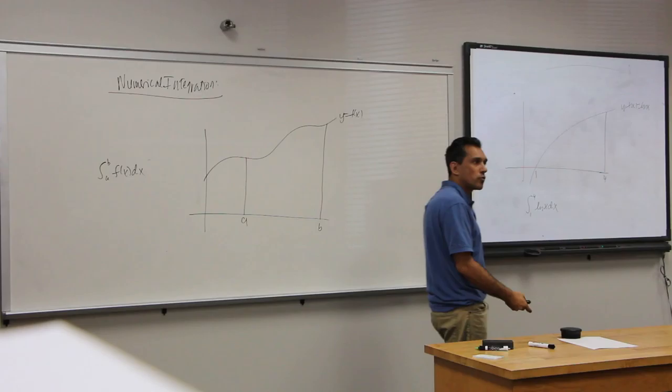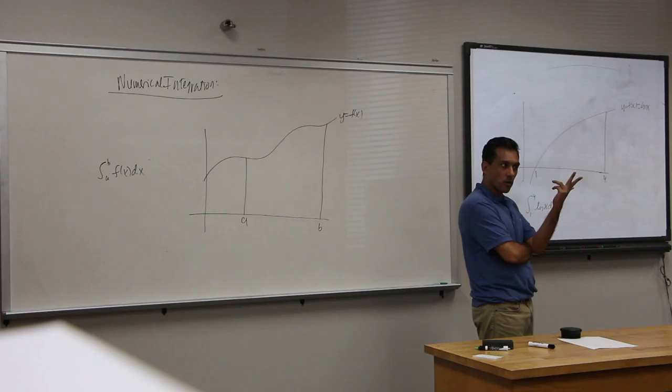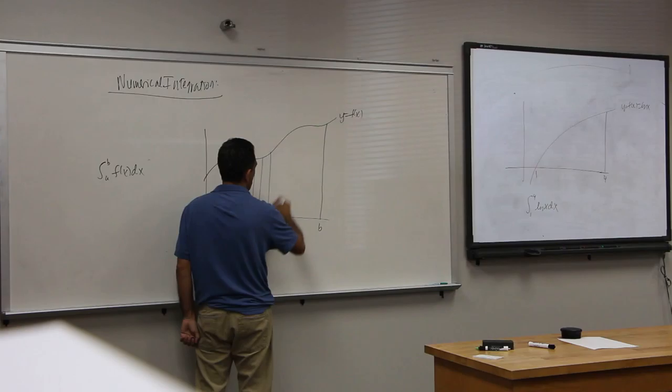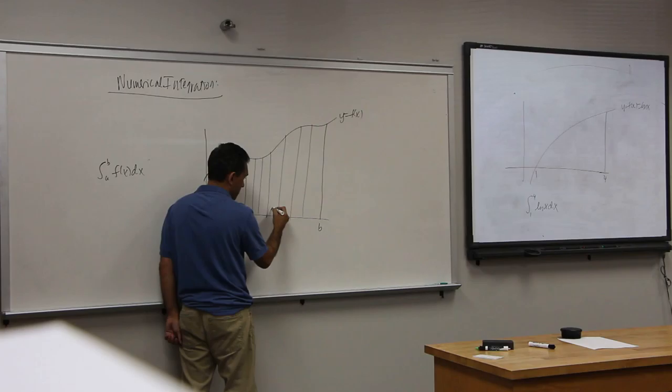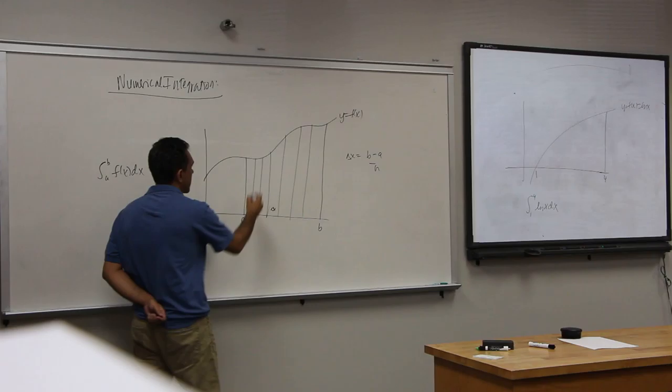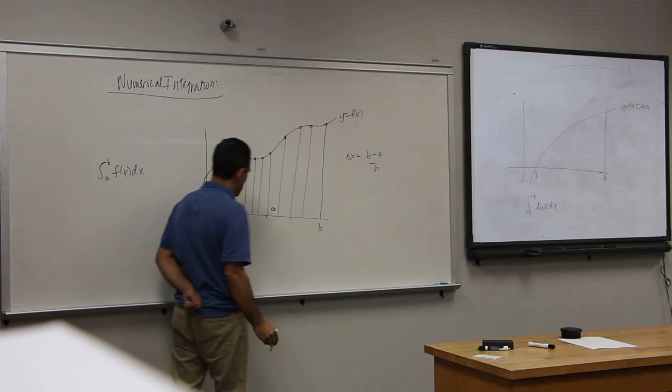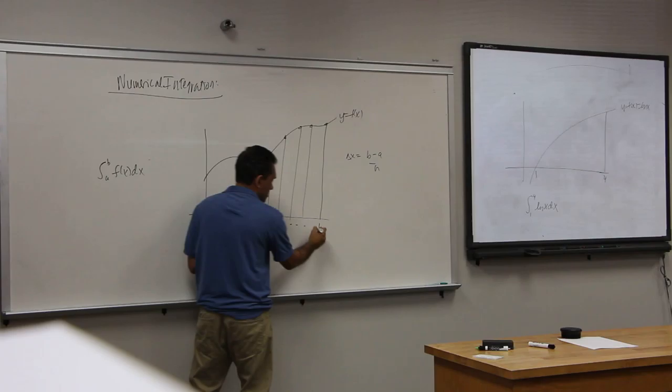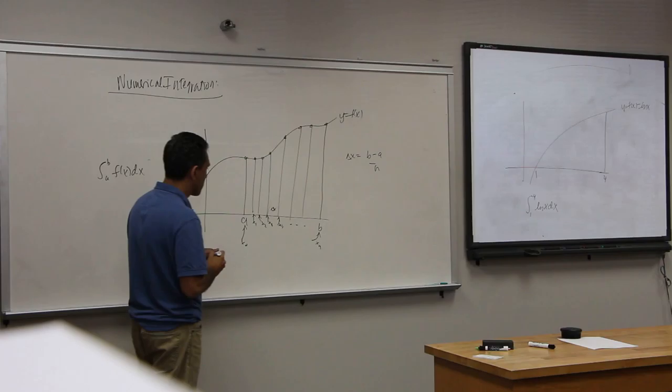So what you do, is you break this up into partitions, and you use some rectangles. And you get an approximation. You use a function to get the height. So you break it up into n. And the thickness is the same. You take your b, you subtract your a, and divide it into n. Then you find the height here, using the function. So this would be x1, this would be x2, this would be x3, this would be x2, this would be x0.